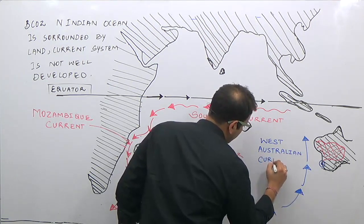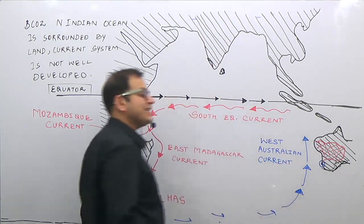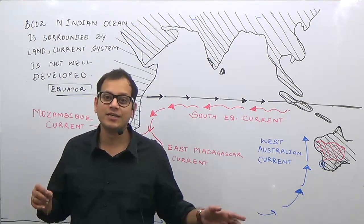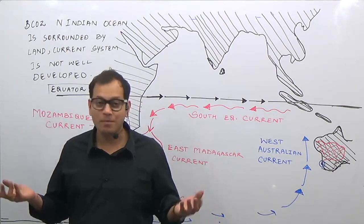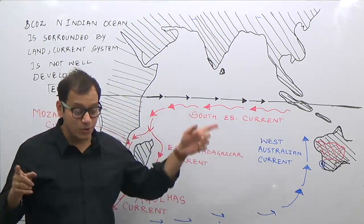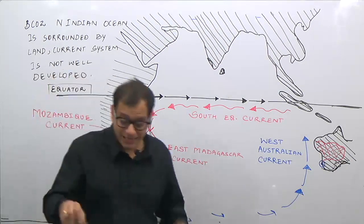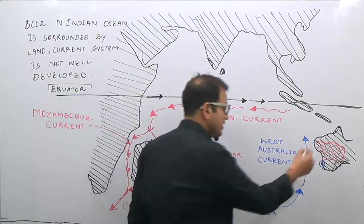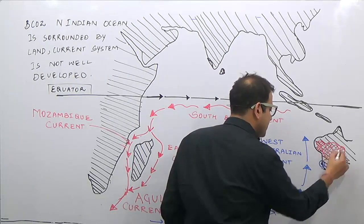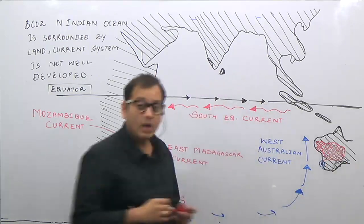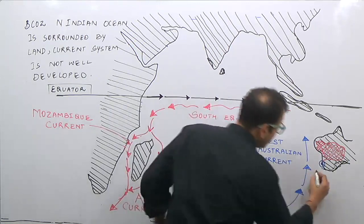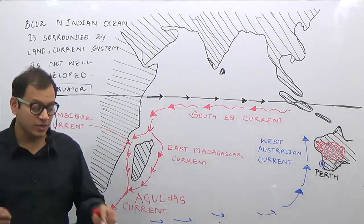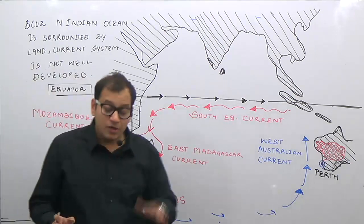The West Australian Current is a cold current. In the previous lecture on the Pacific Ocean we studied the East Australian Current, which is a warm current — remember the West Australian Current is a cold current. Any cold current supports the presence of hot deserts, so we have the Great Australian Desert in this region. The major city located here is Perth.